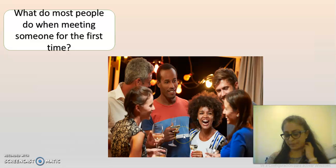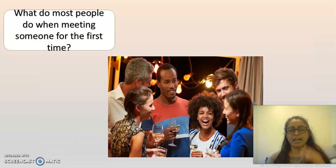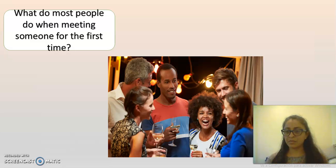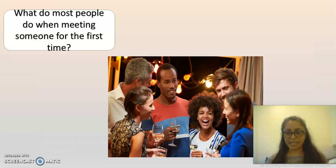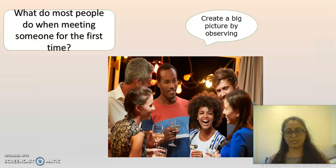To begin, I want you to think of a party and what most people do when meeting someone for the first time. You look around, approach someone based on how friendly they look — if they smile at you, or if they are drinking something similar to you, or maybe there's a group of people dancing and you approach them and start socializing. At the beginning, we create a big picture by observing, and then you say, I can be a friend with this person or I can start a conversation with this person.